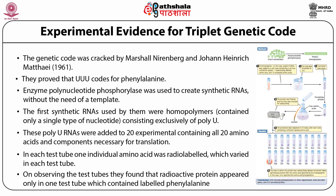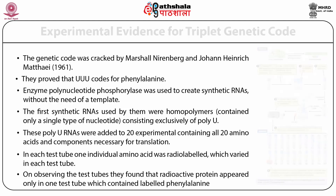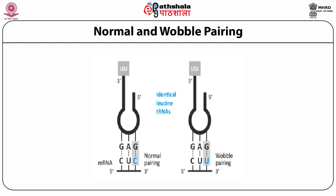Today we know the sequence of bases which code for each amino acid found in proteins. Normal and wobble pairing — wobble hypothesis: Francis Crick in 1966 gave the wobble hypothesis, according to which there is a flexibility of base at the third position of the codon — for example, alanine is coded by GCU, GCA, GCC and GCG.